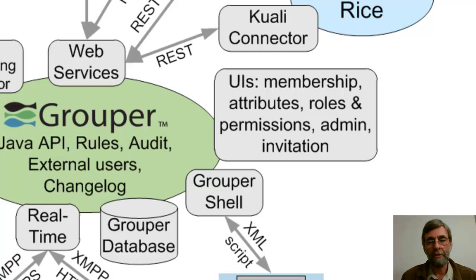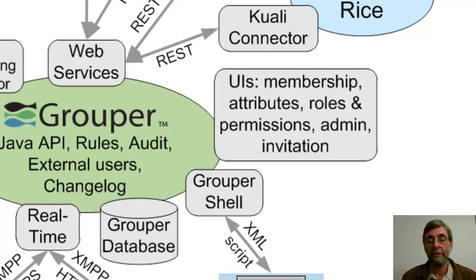There's also an invitation interface, and this goes back to external users. The story is that you often want to manage people's access to some of your services even though they aren't in your organization — they're from outside and so not in your identity management system. You can invite them into Grouper using the invitation user interface, and then they can be placed into groups and roles and given permissions, with their access managed by means of federated identity and federated authentication in the services that Grouper is managing access to.